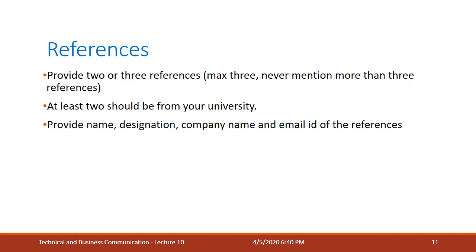For references, include two to three professional references at the end of your CV — never write 'references available upon request,' as that can destroy an otherwise good CV. A maximum of three references is sufficient. If mentioning three, at least two should be from your university — faculty from your undergraduate or master's program — and one from the company where you did your internship or job. For each reference, provide the name, designation, company, email ID, and contact number — nothing more than that.